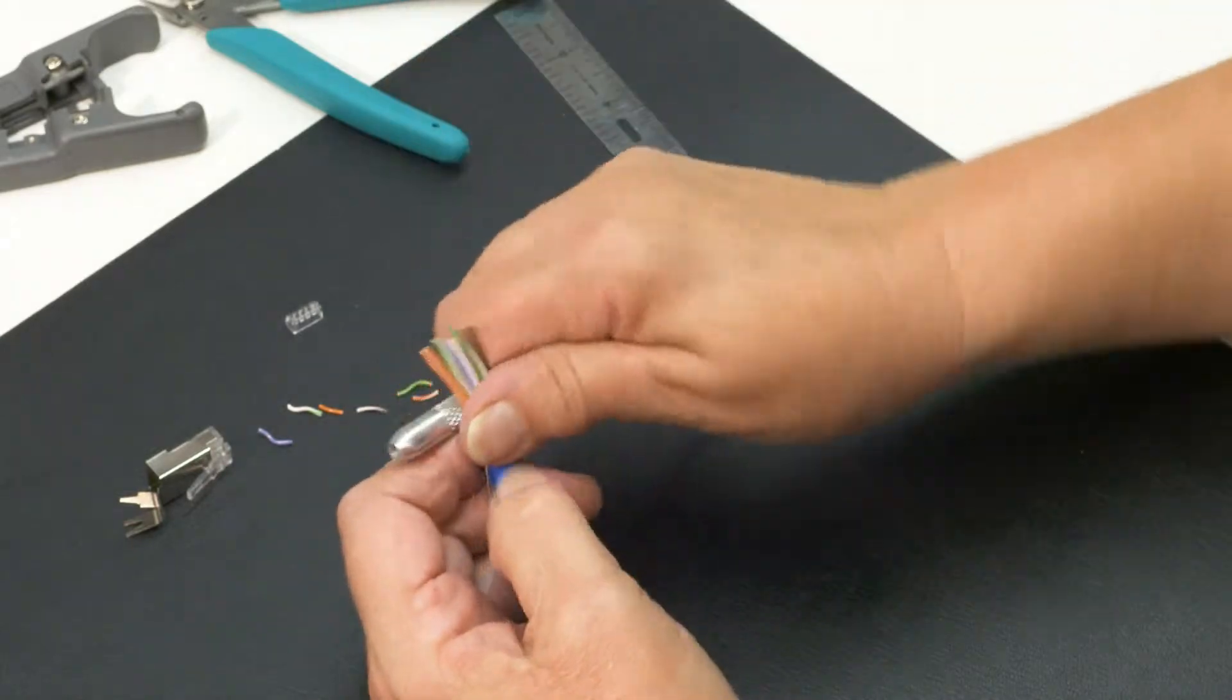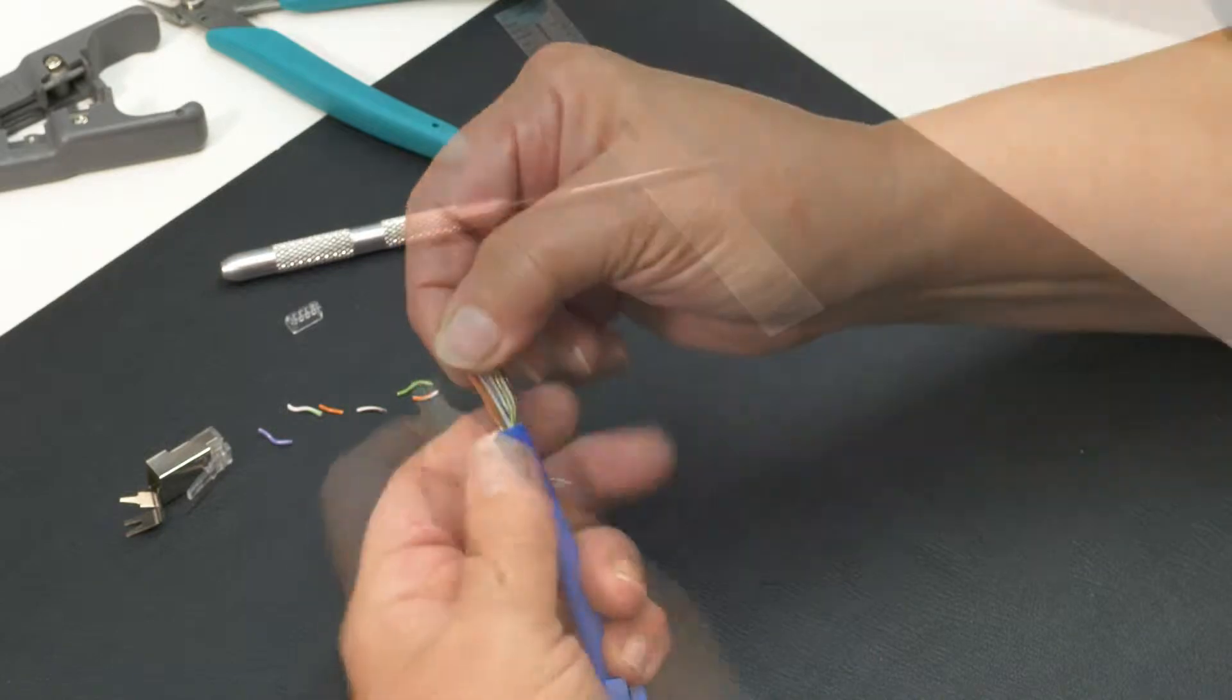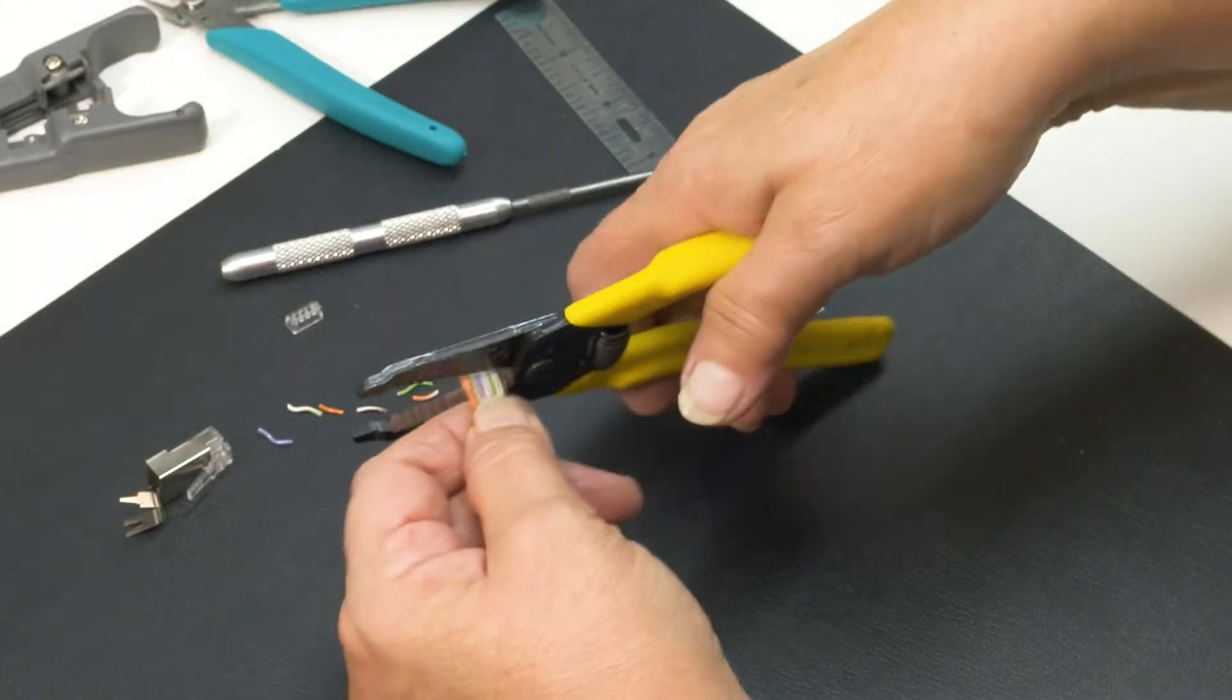Flatten out the cables. Wrap the drain wire around the cable. Next, hold the wires flat and trim them cleanly.